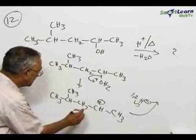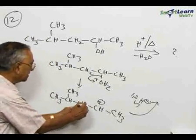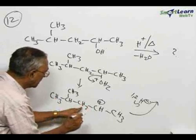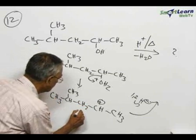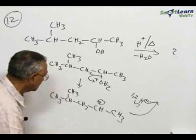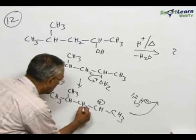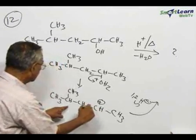So, what is the hydride shift? A hydrogen with the pair of electrons moves over from this carbon to this carbon. It is from this position it changes over to the other position. So, what will be the resulting structure?